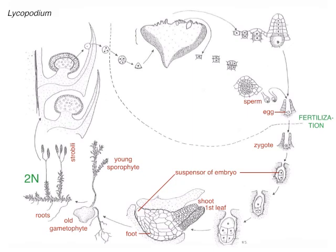And if we take a section through one of those strobili, we get a strobilus that has sporophylls, and those sporophylls are microphylls — a leaf that has a sporangium borne on it. The sporangia in Lycopodium all make the same kinds of spores, which are homosporous spores. So we have a sporocyte that undergoes meiosis and makes spores. The spores are haploid. The spores disperse. Now in Lycopodium, the spores live for a really long time, potentially.